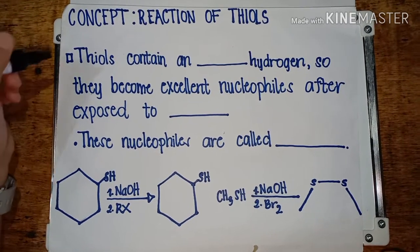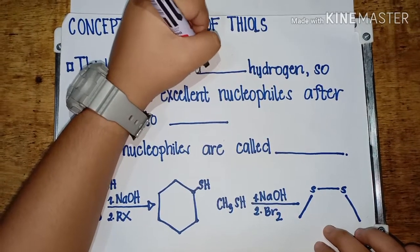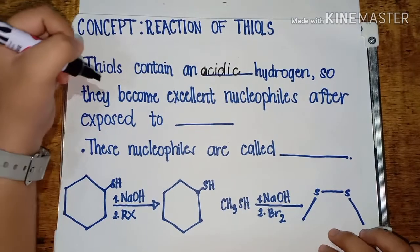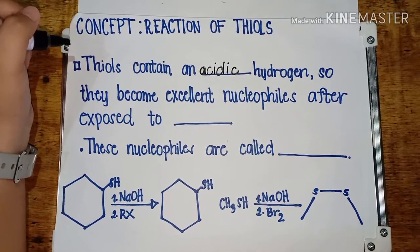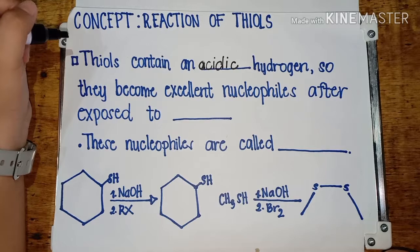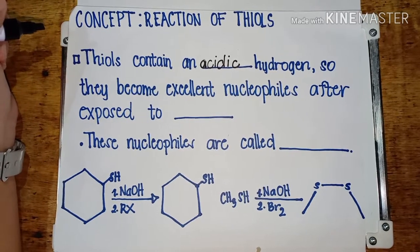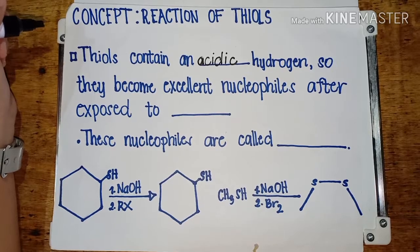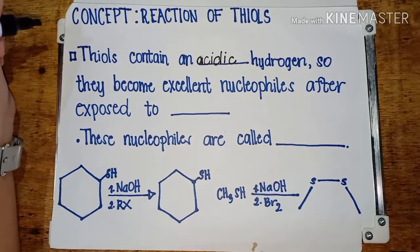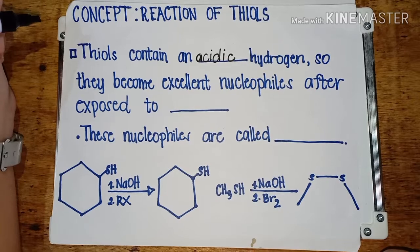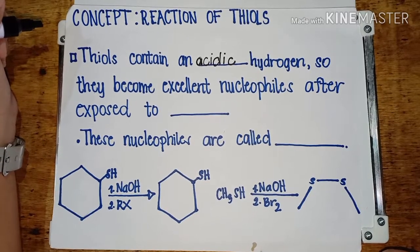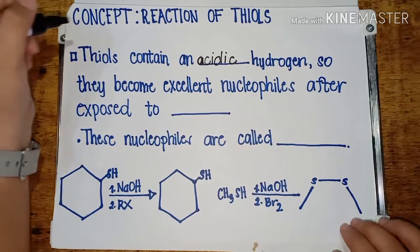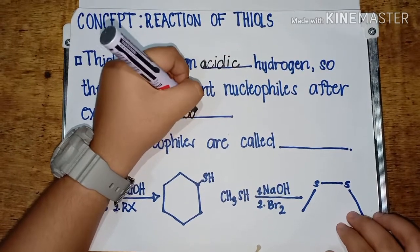Thiols are more acidic than a typical alcohol. Sulfur is a little bit bigger in size, and the size effect says that the bigger the molecule gets, the easier it is to give up a hydrogen and get a lone pair. This means thiols contain a very acidic hydrogen, so it's going to be easy to pull off that hydrogen and make it a nucleophile after it's exposed to base.